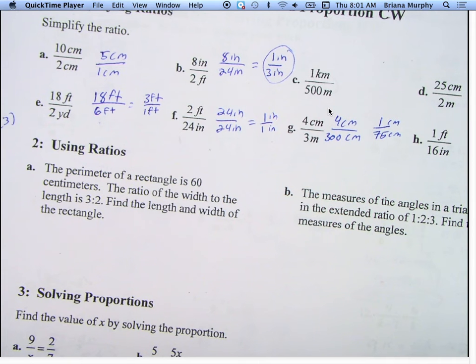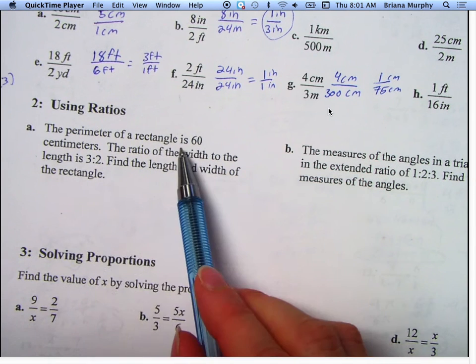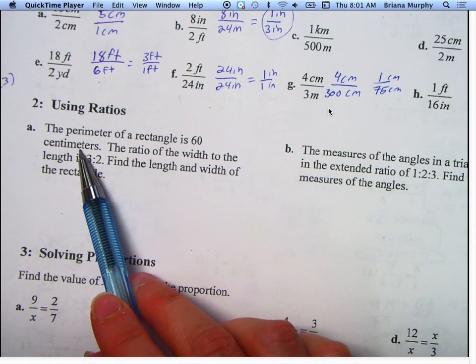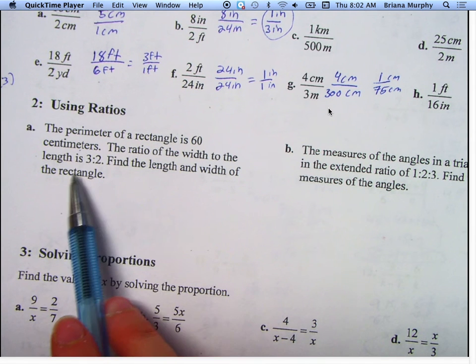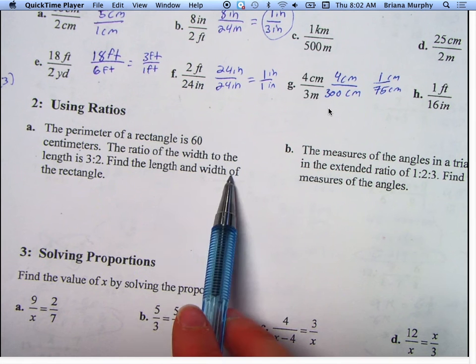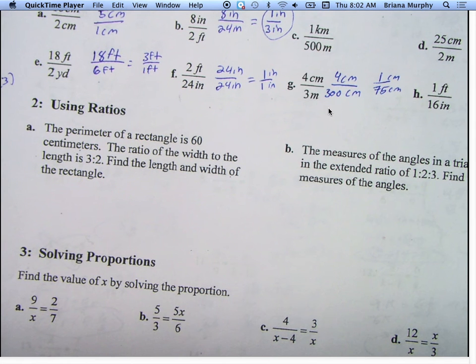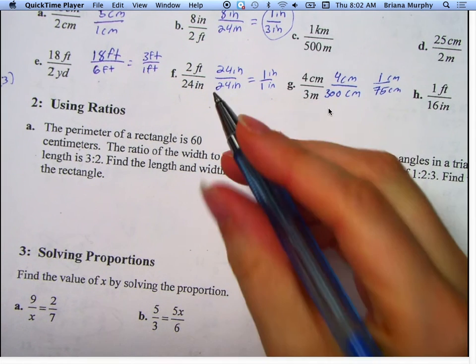Any questions about making sure they're the same units before you reduce them? Okay, we're going to move on to the next section if there's no questions. The perimeter of a rectangle is 60 centimeters. Perimeter means you add up all the outsides, right? The ratio of the width to length is 3 to 2. Find the length and the width of a rectangle.